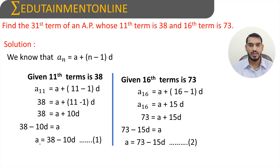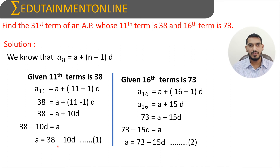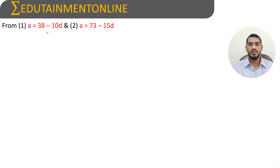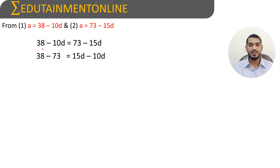We need to solve these two equations. From both equations, the left hand side is 'a': equation 1 gives a = 38 - 10d, and equation 2 gives a = 73 - 15d. Since the left hand sides are equal, the right hand sides must also be equal, so 38 - 10d = 73 - 15d.